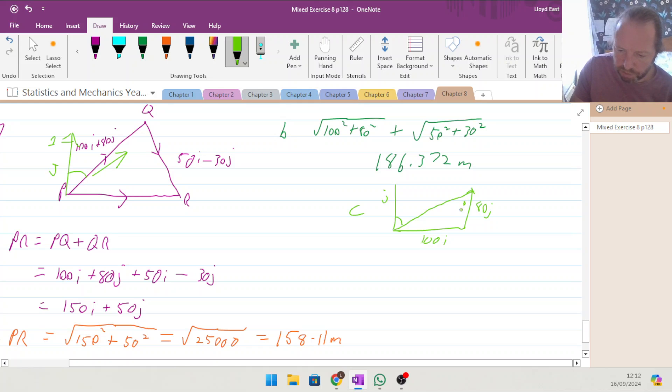Which is the same as this angle here, using your Z angles, or alternate angle theorem, so we can do the tan of theta is going to be opposite adjacent, is going to be 100 over 80, and so theta is equal to inverse tan of 100 divided by 80, 51.34 degrees, and that's the end of chapter eight, and the start of the mechanics section of this book.